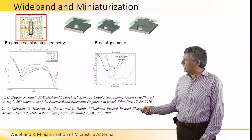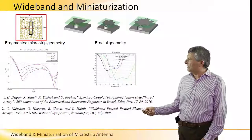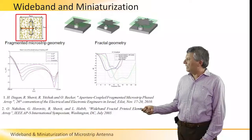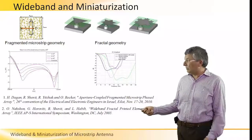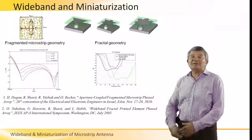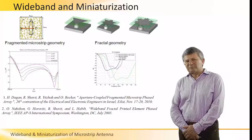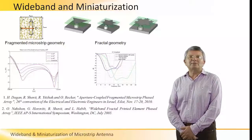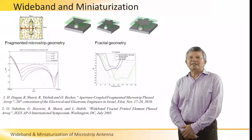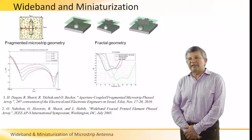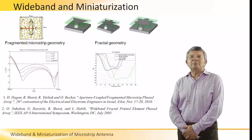Here we are talking about a microstrip aperture-coupled microstrip antenna, and we fragment the conductive patch on top of the antenna, subdividing it into many pixels. Those pixels can be turned on and off in a computer simulation, and this entire structure can be analyzed by an optimization algorithm like a genetic algorithm or PSO algorithm in order to obtain maximum bandwidth.